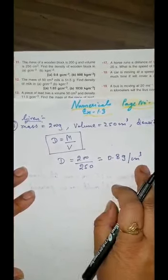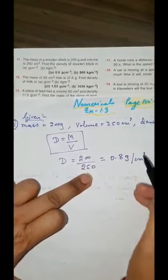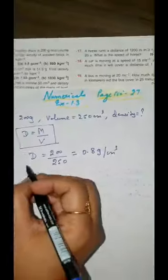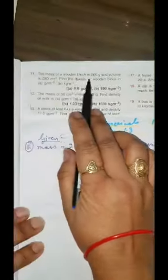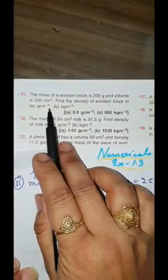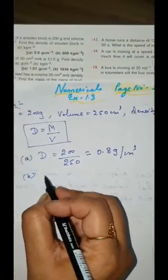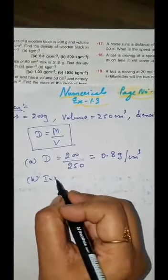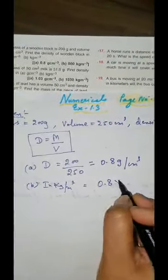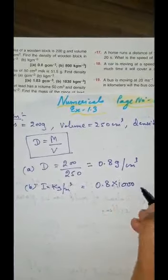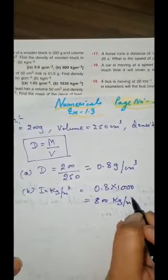Why am I using gram per centimeter cube? Because mass is given in gram and volume is given in centimeter cube. This is our first part. Then the B part — we found the density of wooden block in gram per centimeter cube. B part is kg per meter cube. Simply you will multiply by 1000 by 1000, so it will come 800 kg per meter cube.